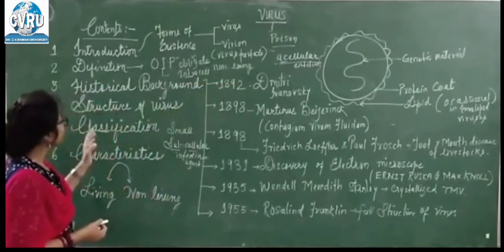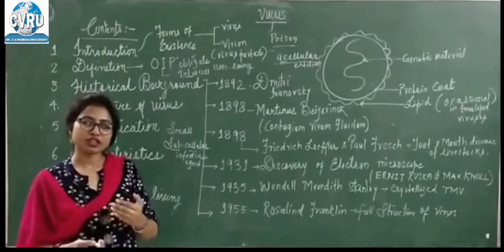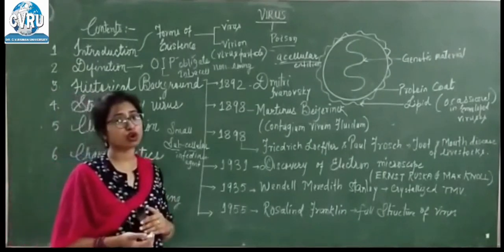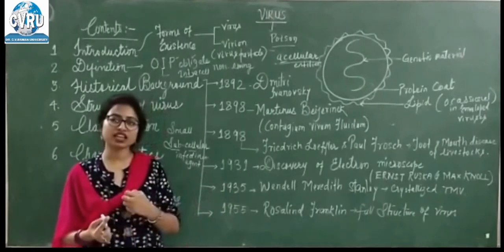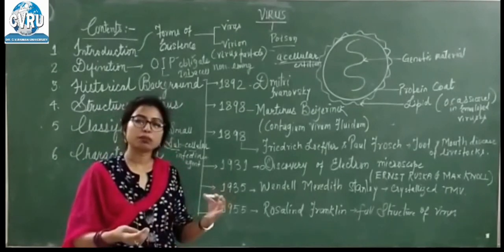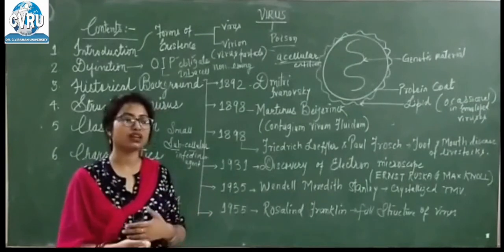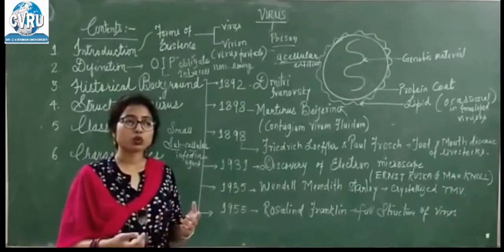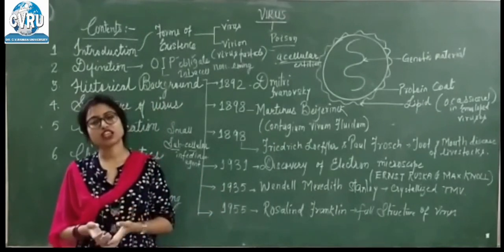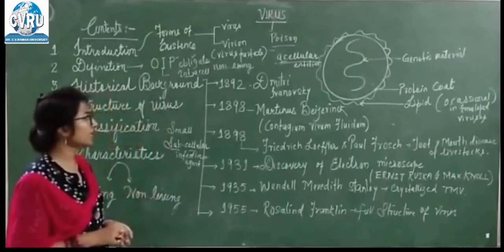तो यह viruses का introduction हो गया. हमने देखा कि viruses small subcellular infectious agents होते हैं, और वो दो form में exist करते हैं — living form और non-living form. जब वो किसी organism में invade करते हैं, तो अपनी genetic material use करके host की machinery से multiply करते हैं. इसलिए इनको parasites कहते हैं.